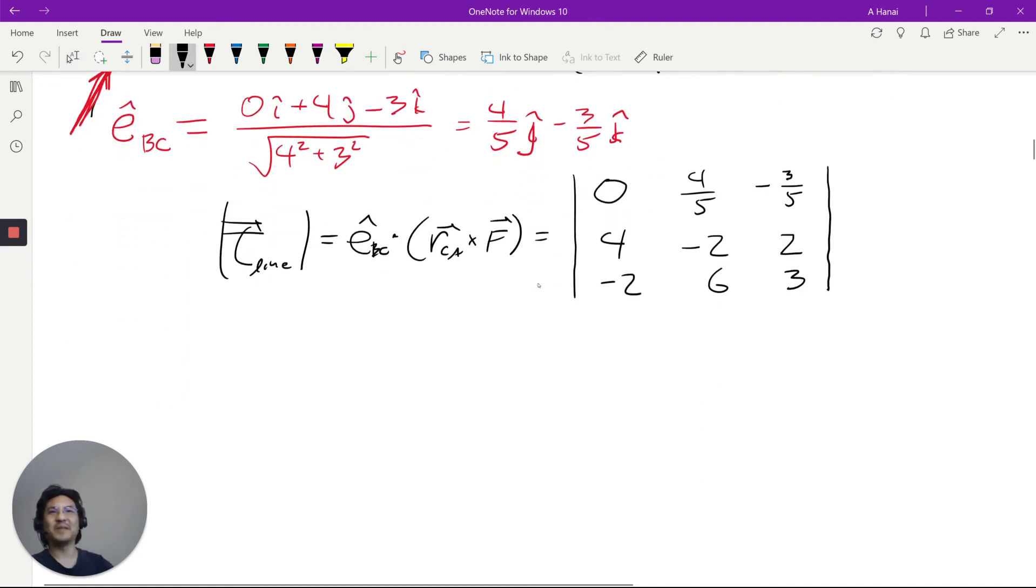So, I'll just write it. All right, so, 0 times this, that's 0, minus 4 fifths, this. All right, so, 4 times 3 minus negative 4.